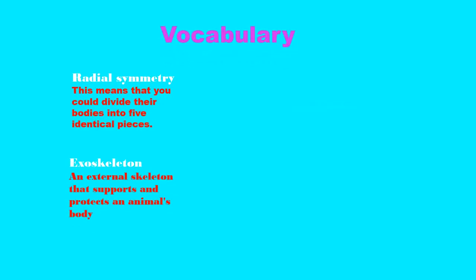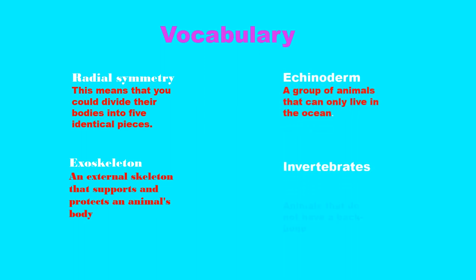Here are some of the vocabulary words that you may meet on this adventure. Radial symmetry — this means that you could divide an enkinoderm's body into five identical pieces. Exoskeleton — an exoskeleton is an external skeleton that supports and protects the animal's body.